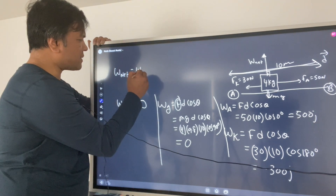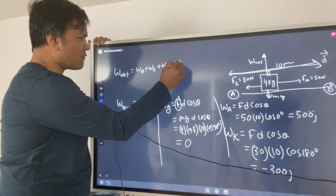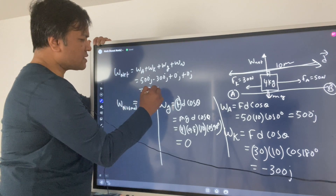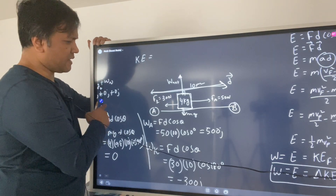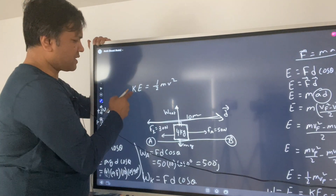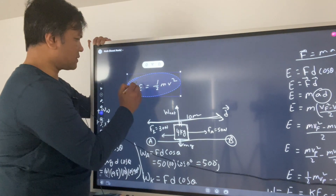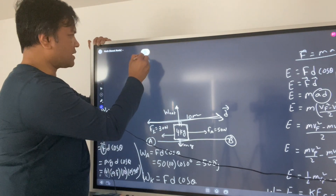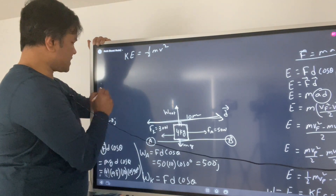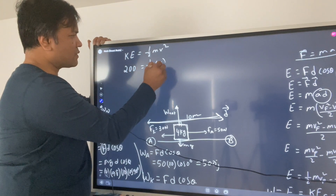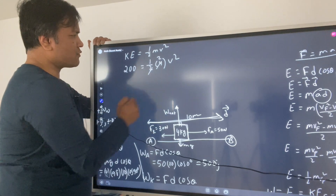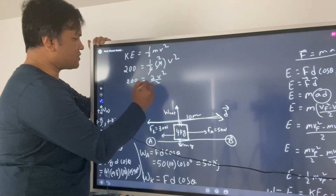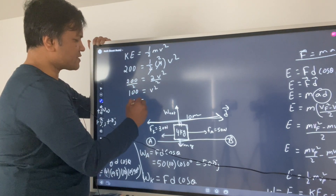Net work equals work by applied force plus work by friction plus work by gravity plus work by normal force: 500 − 300 + 0 + 0 = 200 Joules. Using KE = ½mv², we get 200 = ½ × 4 × v², which simplifies to 200 = 2v², so v² = 100, and v = 10 meters per second.